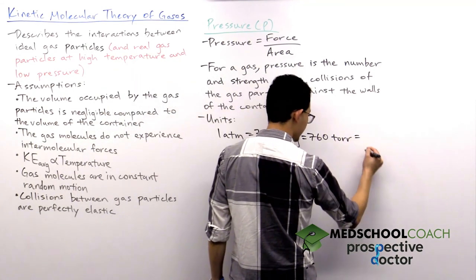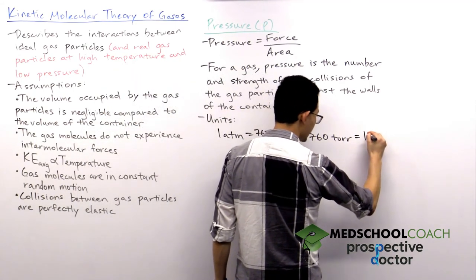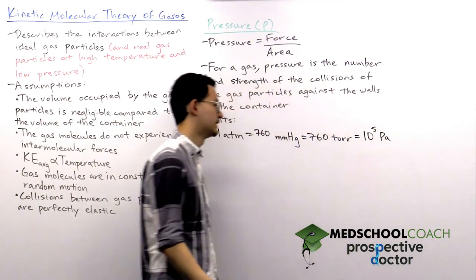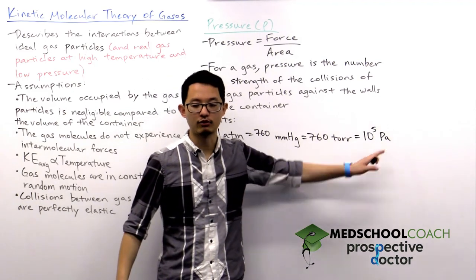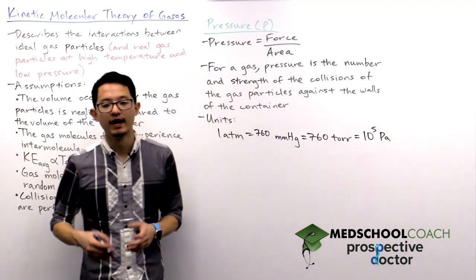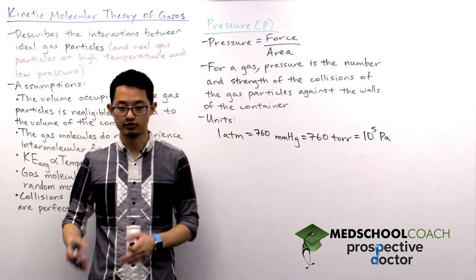The last unit you need to know is pascals. So one atmosphere is approximately equal to one hundred thousand pascals. The pascal is a derived SI unit, so a pascal is equivalent to a newton per meter squared.